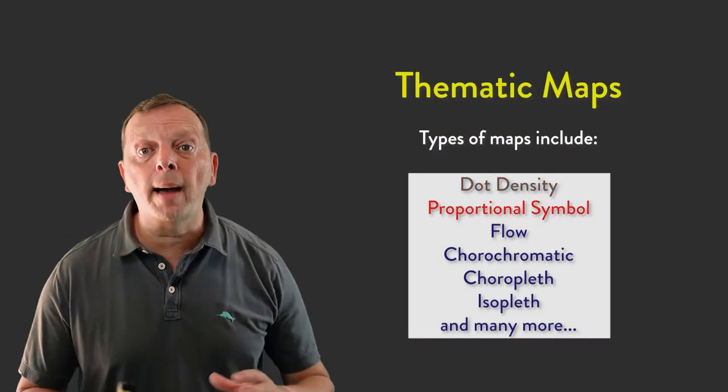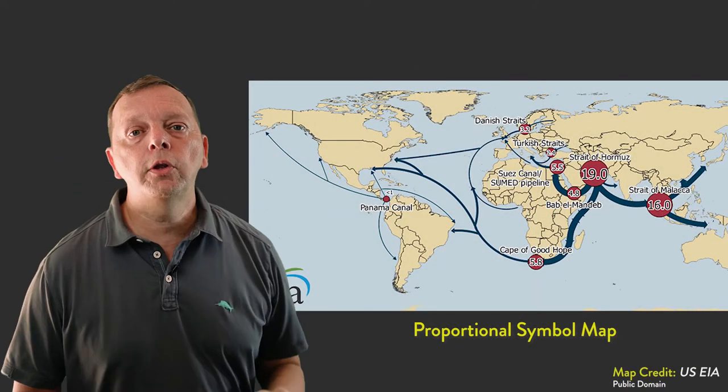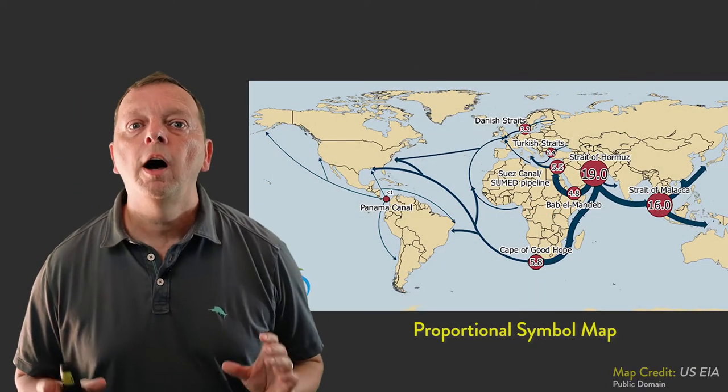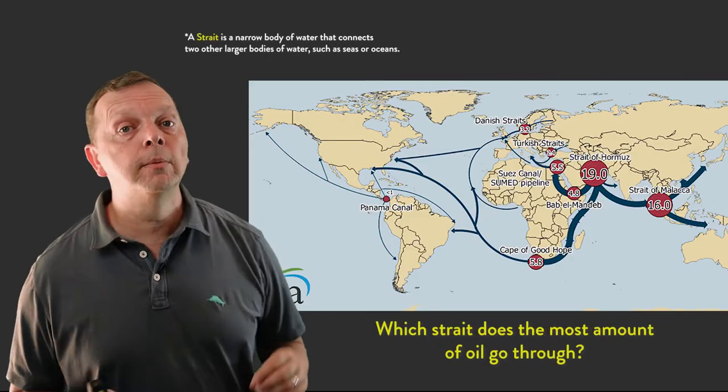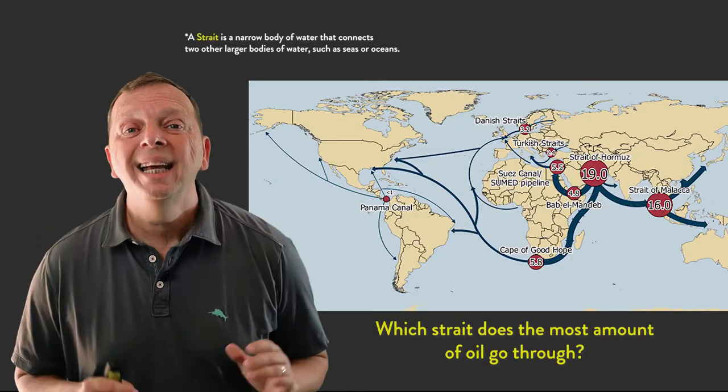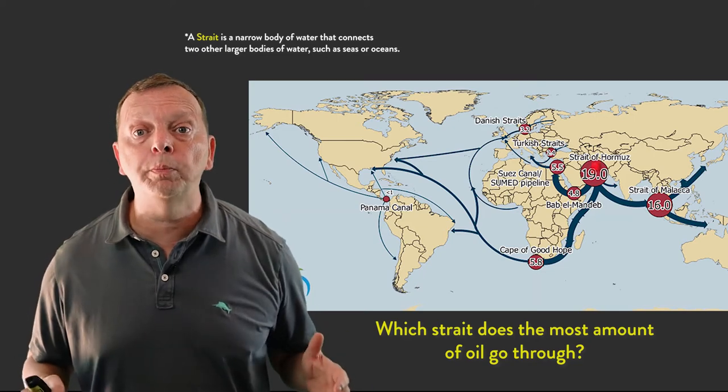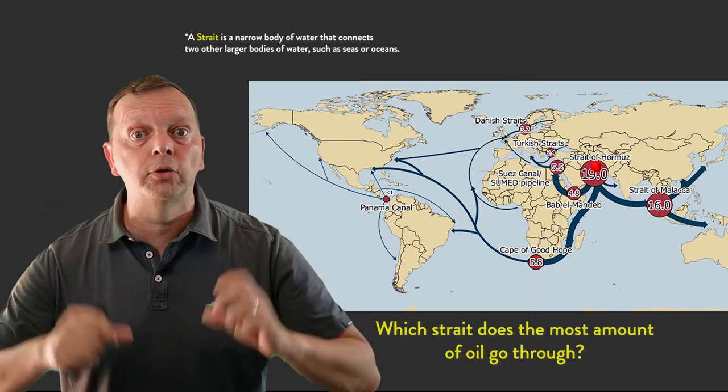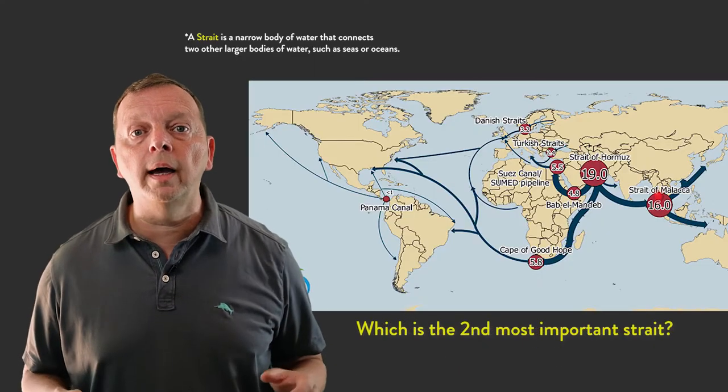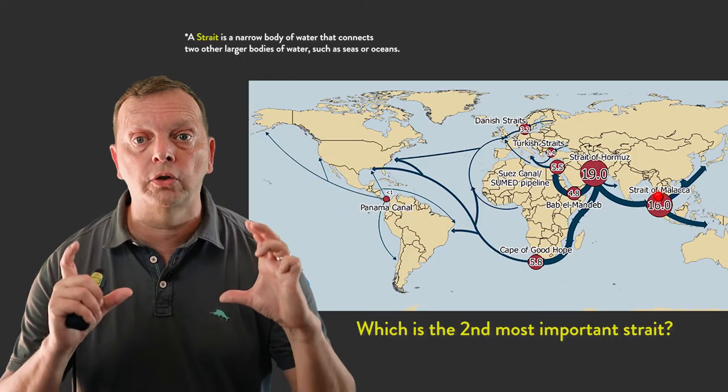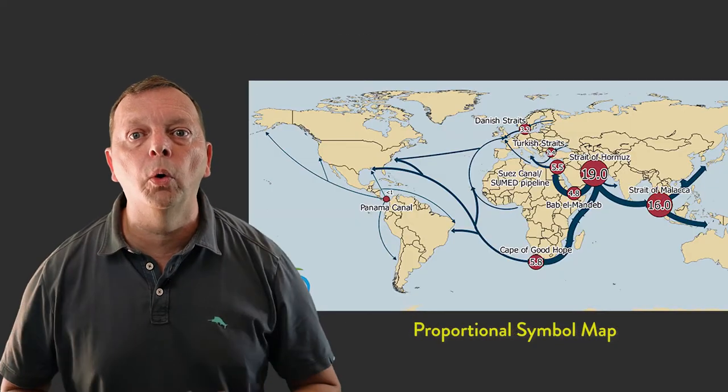Sometimes the symbols on a map will be different sizes. Take, for example, this map that shows the important choke points of the transport and trade of oil. If I ask which strait has the most amount of oil passed through it, it's easy to tell it's the Strait of Hormuz because it's represented by the biggest circle. And you can also tell that the second most important strait is the Strait of Malacca because it has the second largest circle. This is called a proportional symbol map.